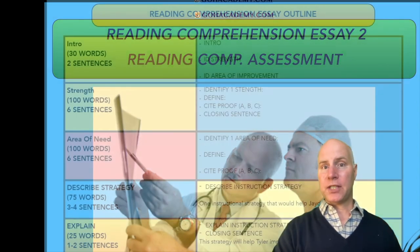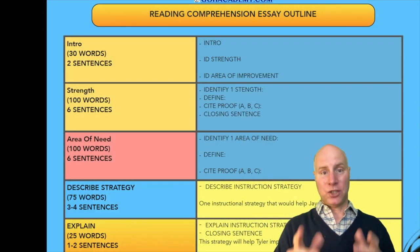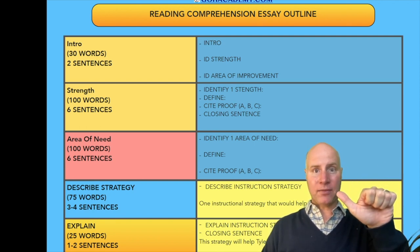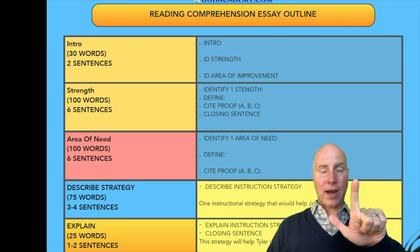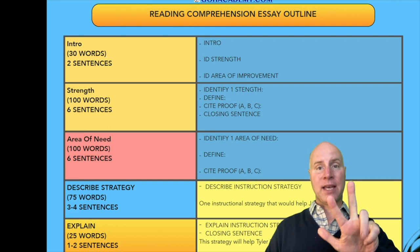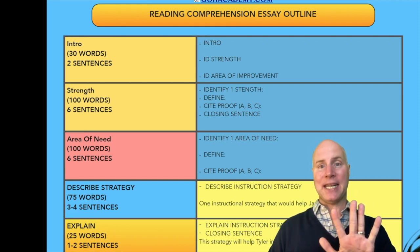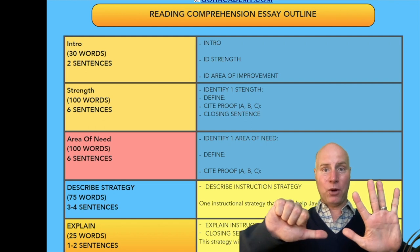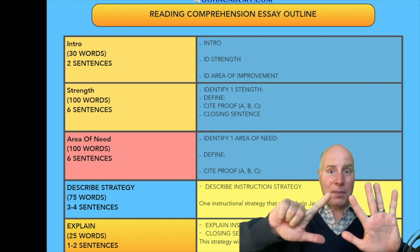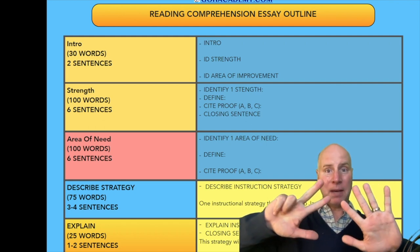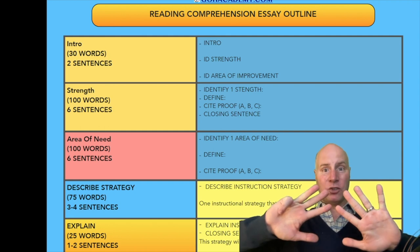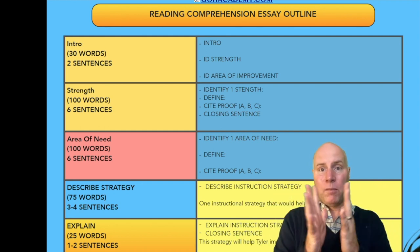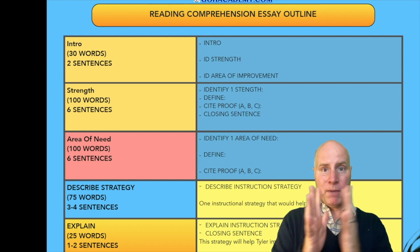Just like the first essay, we had an outline where you had to identify — you did that intro paragraph, strength paragraph, area of need paragraph, and instructional strategy with the mini lesson. This essay is going to be almost the same. You're going to have that intro paragraph, strength paragraph, area of need paragraph, instructional needs paragraph, and mini lesson. So those elements are almost mirror images.